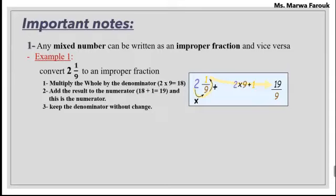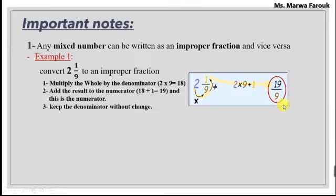The denominator doesn't change. As you can see here, the denominator doesn't change — 9 and 9 — just the numerator has changed. And we got now an improper fraction.